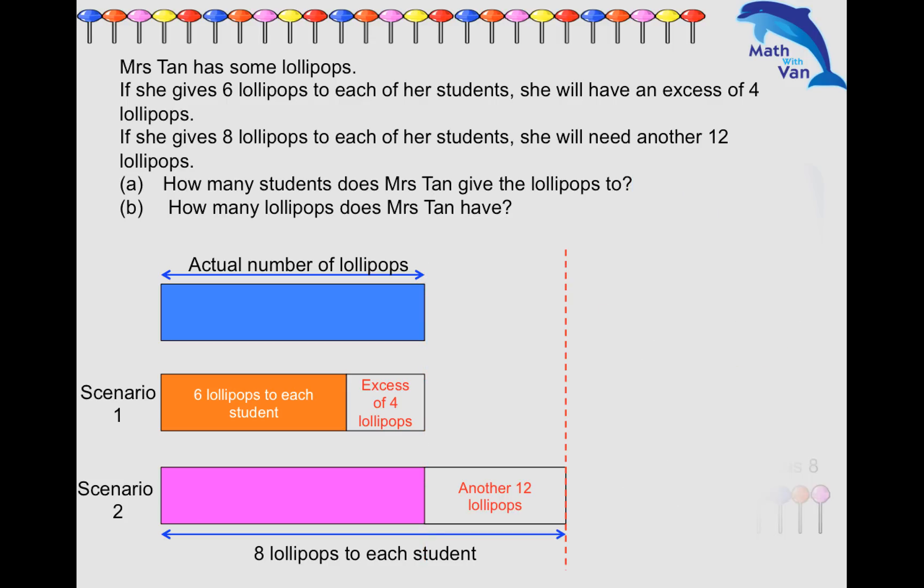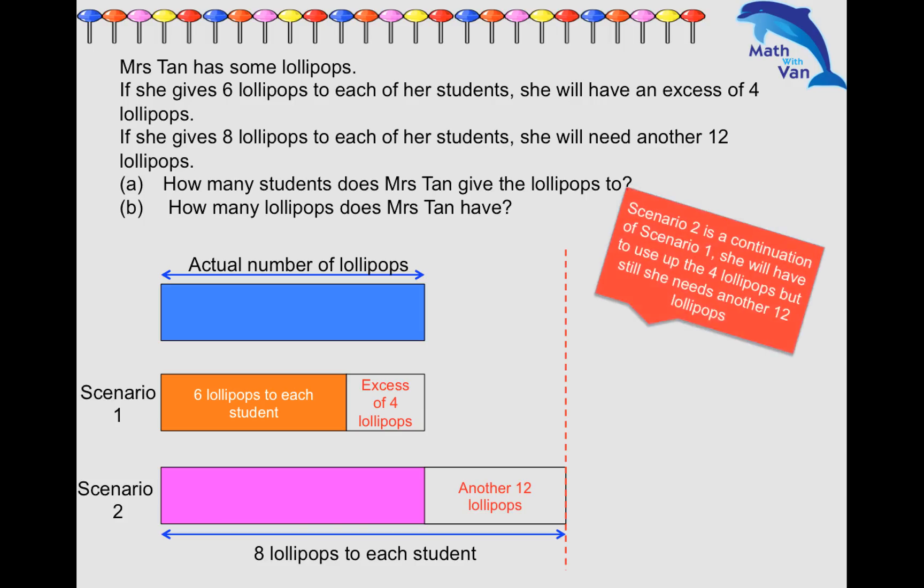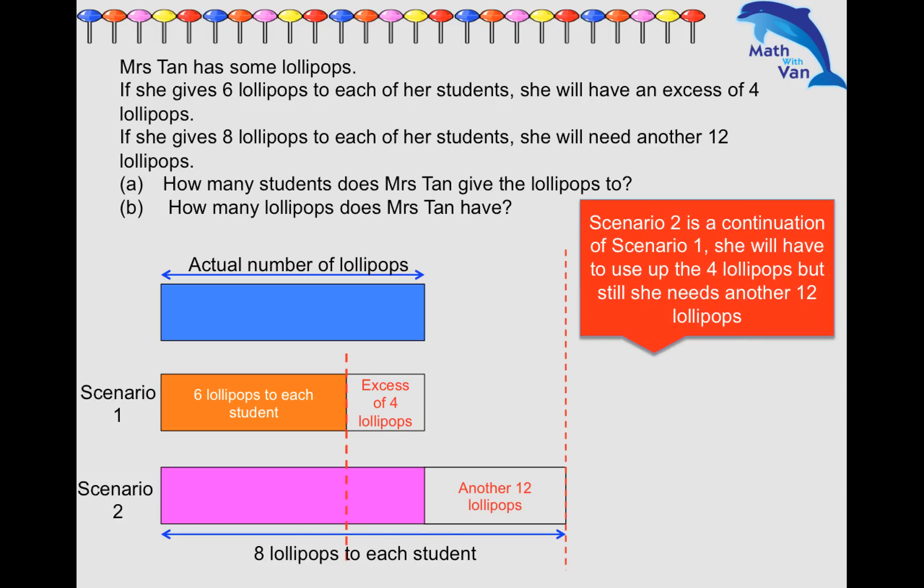So let's take a look here. At this point in time you may want to see scenario two as a continuation of scenario one. So let me say that scenario one is at first and scenario two is in the end. So right now each student already has six lollipops. In order to give two more to make it eight, how many more lollipops does Mrs. Tan need to have?